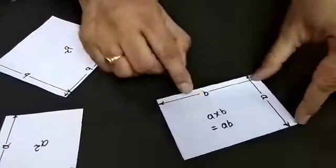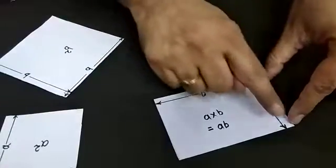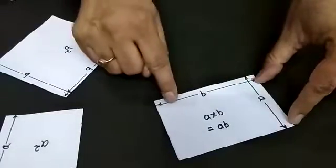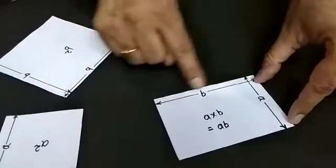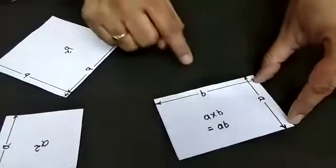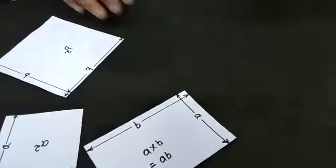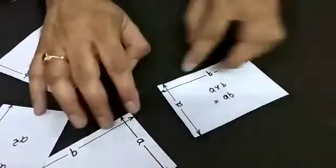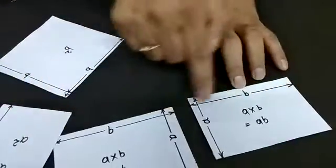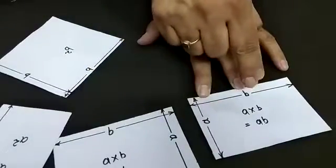And we have a rectangle with sides a and b, length of rectangle is b and width is a, so the area is a×b. And we have another rectangle similar to that, a×b.